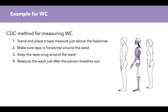To measure waist circumference using the CDC method: have the person stand and place a tape measure just above the hip bones, locate where the hip bone ends, wrap the tape horizontally around the waist, keep it snug, and measure just after the person breathes out. Record the amount in inches.